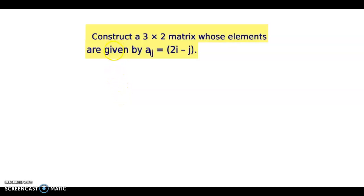Hello and welcome back. I am going to discuss an example from matrices. Question: Construct a 3 by 2 matrix whose elements are given by aij equals 2i minus j. So basically we have three rows and two columns. We need to construct this matrix, so it has three rows and two columns—a 3 by 2 matrix.